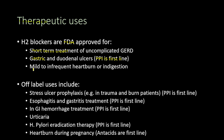They are also FDA approved for mild to infrequent heartburn or indigestion. Off-label uses include stress ulcer prophylaxis in trauma and burn patients, esophagitis and gastritis treatment, gastrointestinal hemorrhage treatment — all as second line after proton pump inhibitors. They are also used for urticaria, H. pylori eradication therapy as second line after PPIs, and heartburn during pregnancy as second line after antacids.